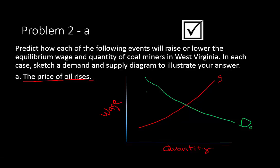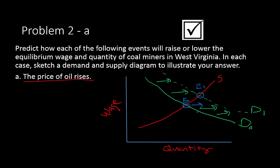Supply is not affected. Demand shifts to the right — D1 is the new demand curve. The equilibrium shifts from E0 to E1. Quantity increases and wages increase. So the price of oil rising raises the equilibrium wage and raises the quantity of coal miners.